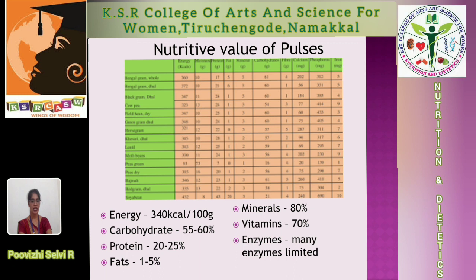This shows the nutritive value of pulses. It is rich in protein, very essential for body building and for growing and building the body tissues. It contains energy 340 kilocalories per 100 grams, carbohydrate 55–60%, protein 20–25%, fat 1–5%, minerals 80%, vitamins 70%, and also some limited enzymes.